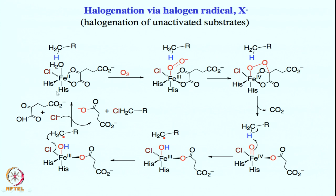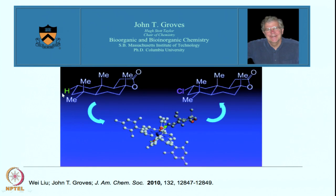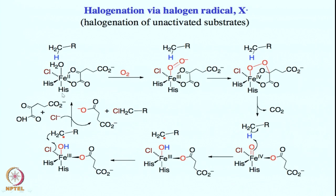In alpha-ketoglutarate dependent hydroxylases this would essentially be a carboxylate unit — this motif is called a facial triad motif when you have a carboxylate group there. Here we have 2 histidine and 1 chloride, forming an iron chloride complex along with the beta-ketoglutarate, which is a bidentate ligand binding iron effectively. In the active site this is the real active intermediate to start with, and the aliphatic substrate is sitting right next to it.